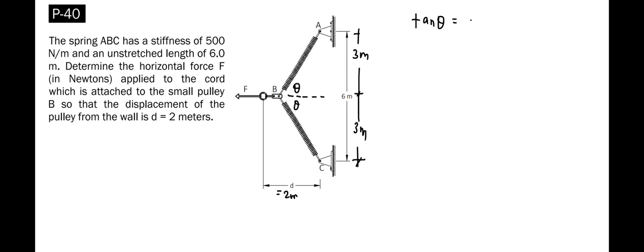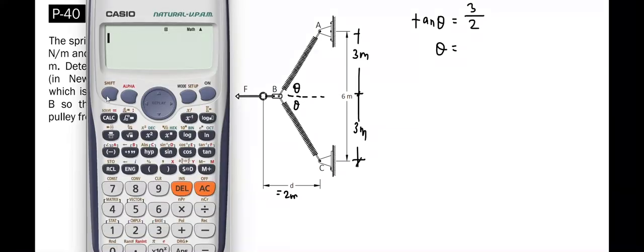By using the tangent function, tan theta equals the opposite side of 3 meters divided by the adjacent side of 2 meters. We can solve for theta by getting the arctangent function of 3 over 2, that is 56.31 degrees.